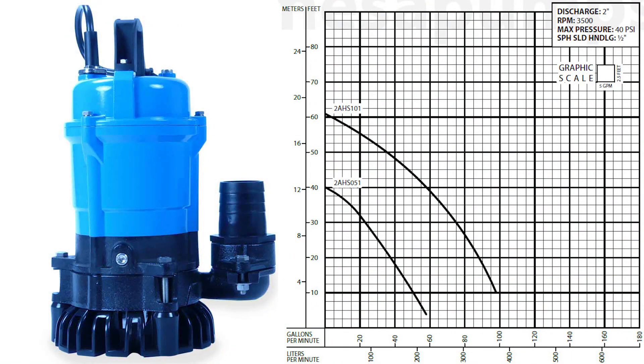At the standard 3500 RPM, the half-horsepower model can produce 40 feet of head and a maximum flow rate of 59 gallons per minute. The one-horsepower model can produce 61 feet of head and a maximum flow rate of 98 gallons per minute.